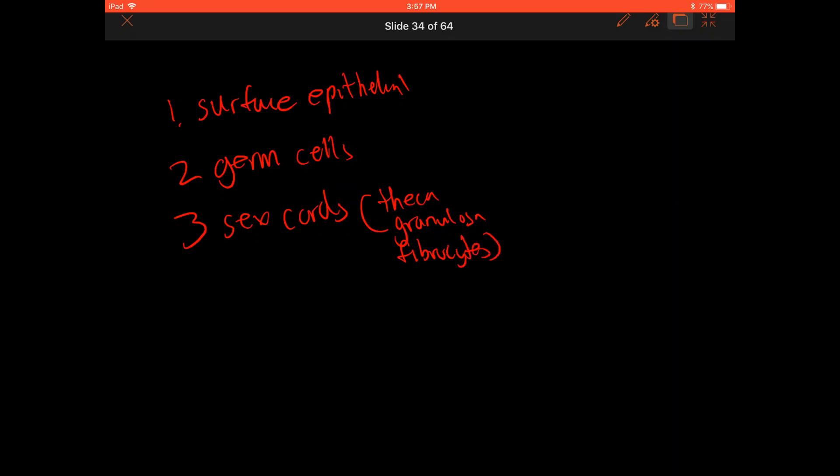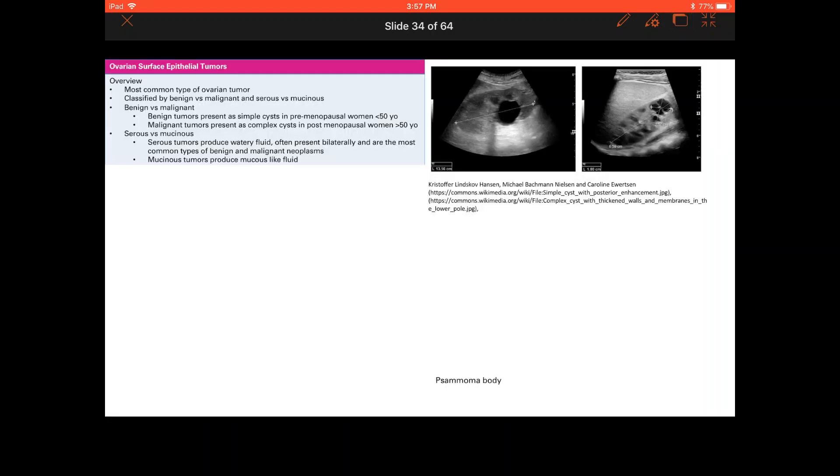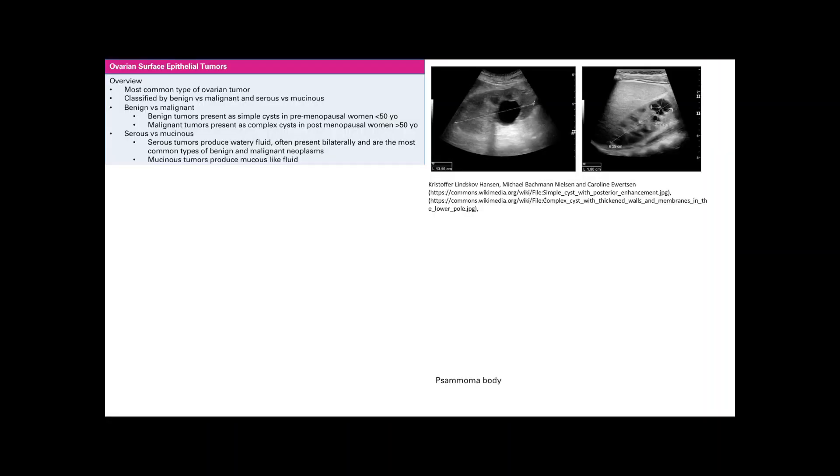All these components of the ovary can eventually develop both benign as well as malignant tumors. Ovarian surface epithelial tumors are the most common type of tumors. You can classify them in a couple ways.